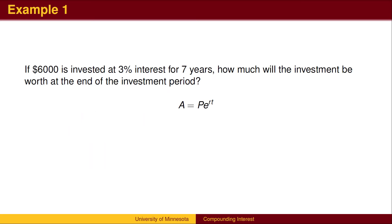Here is an example. If $6,000 is invested at 3% interest for 7 years, how much will the investment be worth at the end of the investment period? This is a straightforward calculation. The investment will be worth $7,402.06. Note that banks will always round off in their favor.